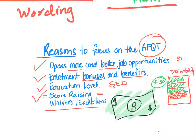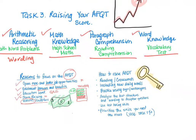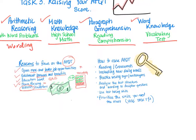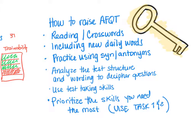Finally, waivers and exceptions: if for some reason you're not eligible — maybe a health condition or other factors your recruiter discusses — a high enough AFQT score may allow for a waiver because there is that much use for you in the armed forces. It may open specific jobs suited to your situation, but it could make you eligible when you otherwise wouldn't have been. Hopefully that motivates you to see the importance of these four sections.